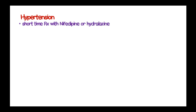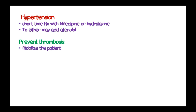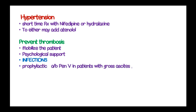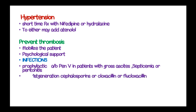Hypertension is managed using short-term treatment with nifedipine and hydralazine, and atenolol can be added. Thrombosis is prevented by encouraging patient mobilization and psychological support. Infections are managed using prophylactic penicillin-V in patients with gross ascites, septicemia, or peritonitis, and first-generation cephalosporins such as cloxacillin and flucloxacillin together with third-generation cephalosporins can be added. Hypovolemia is managed using albumin infusion.